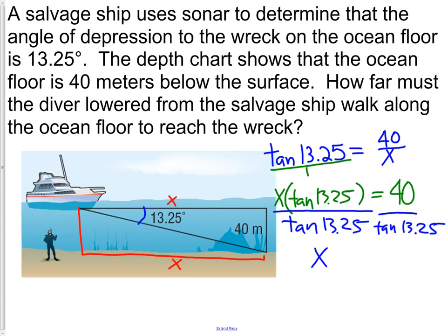Getting out your calculators, you will see that the distance the diver needs to walk, 40 divided by tangent 13.25, is 169.873. And our label here was meters. We have our answer. The diver needs to walk 169.873 meters along the ocean floor to get to the object.